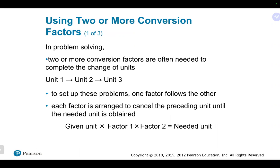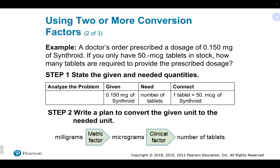When using two or more conversion factors, you can get intermediate answers, but you want to make sure you don't round until the very end. Here's a problem: a doctor prescribes a dose of 0.15 milligrams. If you only have 50 microgram tablets in stock, how many tablets are required? We need to do a couple of conversions — we need to go from milligrams to micrograms, since we can't use those units together directly.